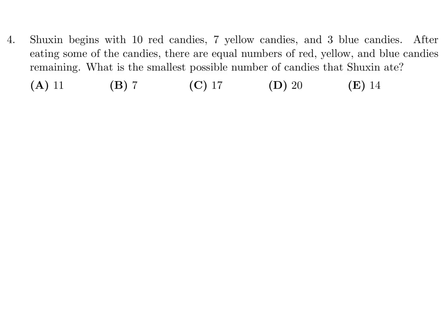Shuxin begins with 10 red, 7 yellow, and 3 blue candies. After eating some of the candies, there are equal numbers of red, yellow, and blue remaining. What is the smallest possible number of candies that Shuxin ate? So 10 red, 7 yellow, and 3 blue. We have to eventually get to the same number. So that same number is most likely 3, because you can't go lower than 3.